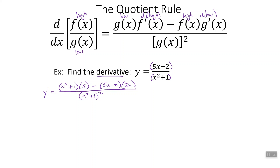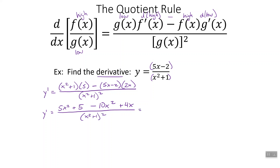Now we want to simplify, so the algebra part comes in. We're going to distribute the 5 here — just clean up the top; nothing to do on the bottom. Minus, distribute the 2x: 2 times 5 is 10, x times x is x squared, minus negative gives us plus, 2 times 2 is 4x on top. The bottom stays x squared plus 1 squared. There are like terms: 5x squared and minus 10x squared gives negative 5x squared, plus 4x, plus 5. Doesn't look like anything could factor out. So we leave it just like that — that's our answer.